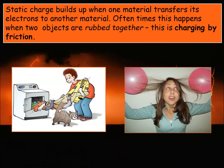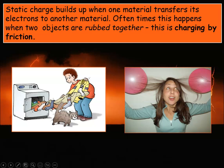Static charge builds up when one material transfers its electrons to another material. Often this happens when two objects are rubbed together — we call this charging by friction. You've probably seen bounce sheets used in the laundry, which help reduce the friction so clothes don't charge as much.